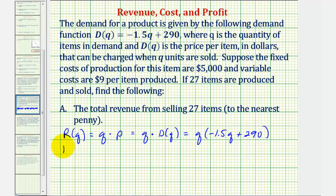If we distribute here, notice the revenue function R of Q is a quadratic function. We have negative 1.5Q squared plus 290 times Q.